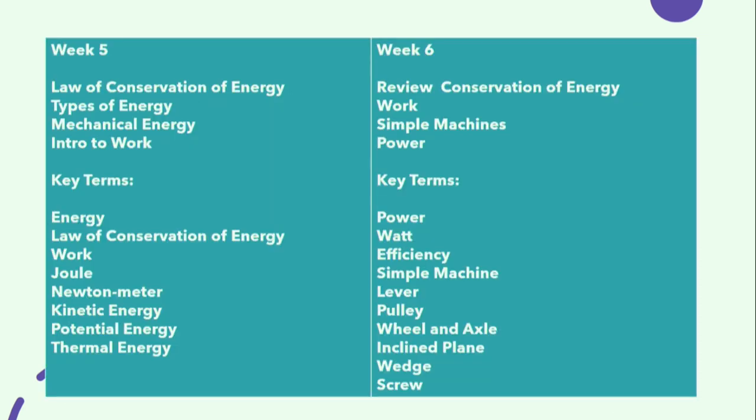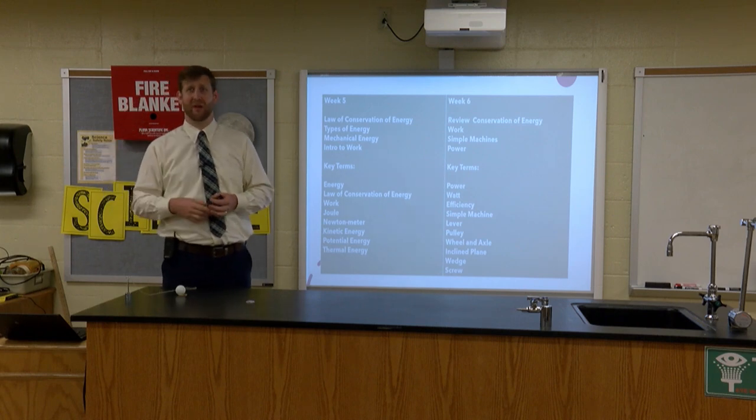The law of conservation of energy states that energy cannot be created nor can it be destroyed — it can only be transferred from one type to another. One example we talked about last week was the Sun. We had helium and hydrogen atoms burning nuclear energy in the Sun. That nuclear energy is transferred to heat energy and radiant energy, which is why the Earth gets light from the Sun — why gamma rays, x-rays, radio waves, microwaves, and visible light rays travel to the Earth.